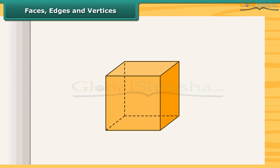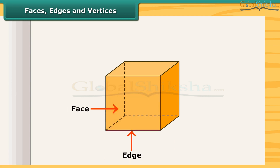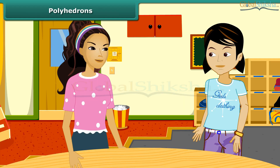Look at this cube. This is the face of a cube, this is the edge of the cube, and this is the vertex of the cube. An edge is a line segment where the faces meet, and the vertices are the points where the edges meet. Do you know what we call a solid having flat faces, edges, and vertices?